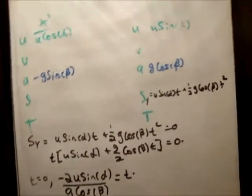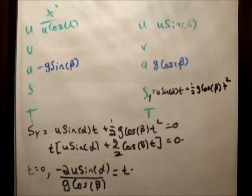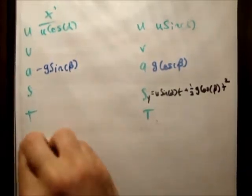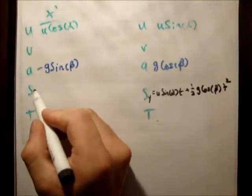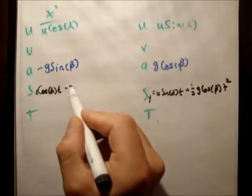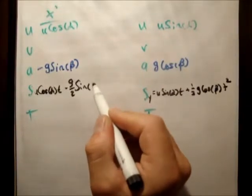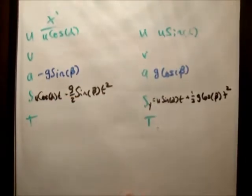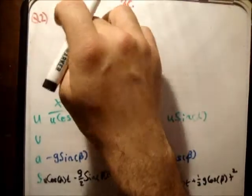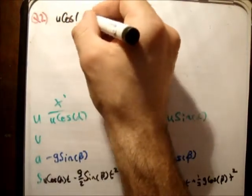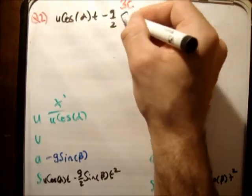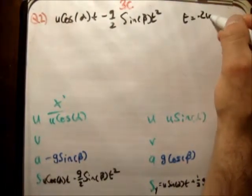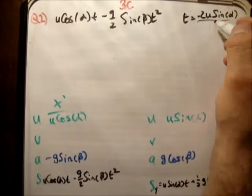The next thing is to find the range. We've found the time at which it's at its maximum range, so now we need to actually find that maximum range. I'm going to plug the time into the expression for s sub x. The expression for s sub x is ut + ½at², which becomes u cos(alpha)·t − g/2 · sine(beta)·t², where t = −2u sine(alpha) / (g cos beta).